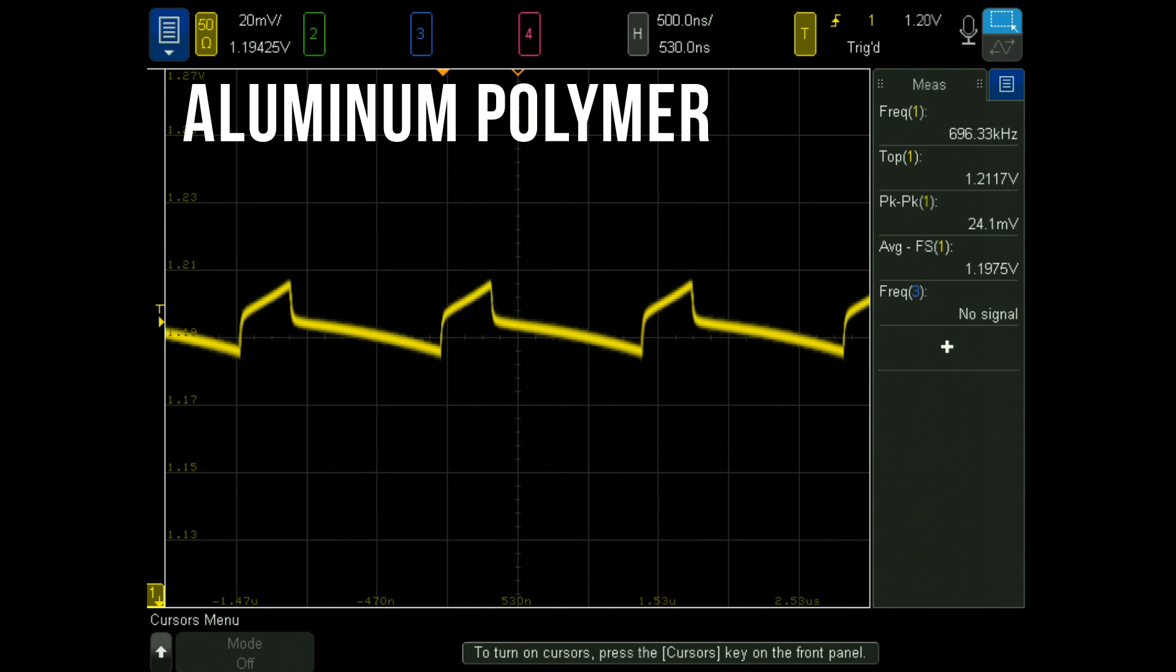The KEMET polymer aluminum solid electrolytic capacitor has a 23.4 millivolt peak-to-peak voltage which is around a 25% reduction in ripple from the previous reading with the KO capacitor.